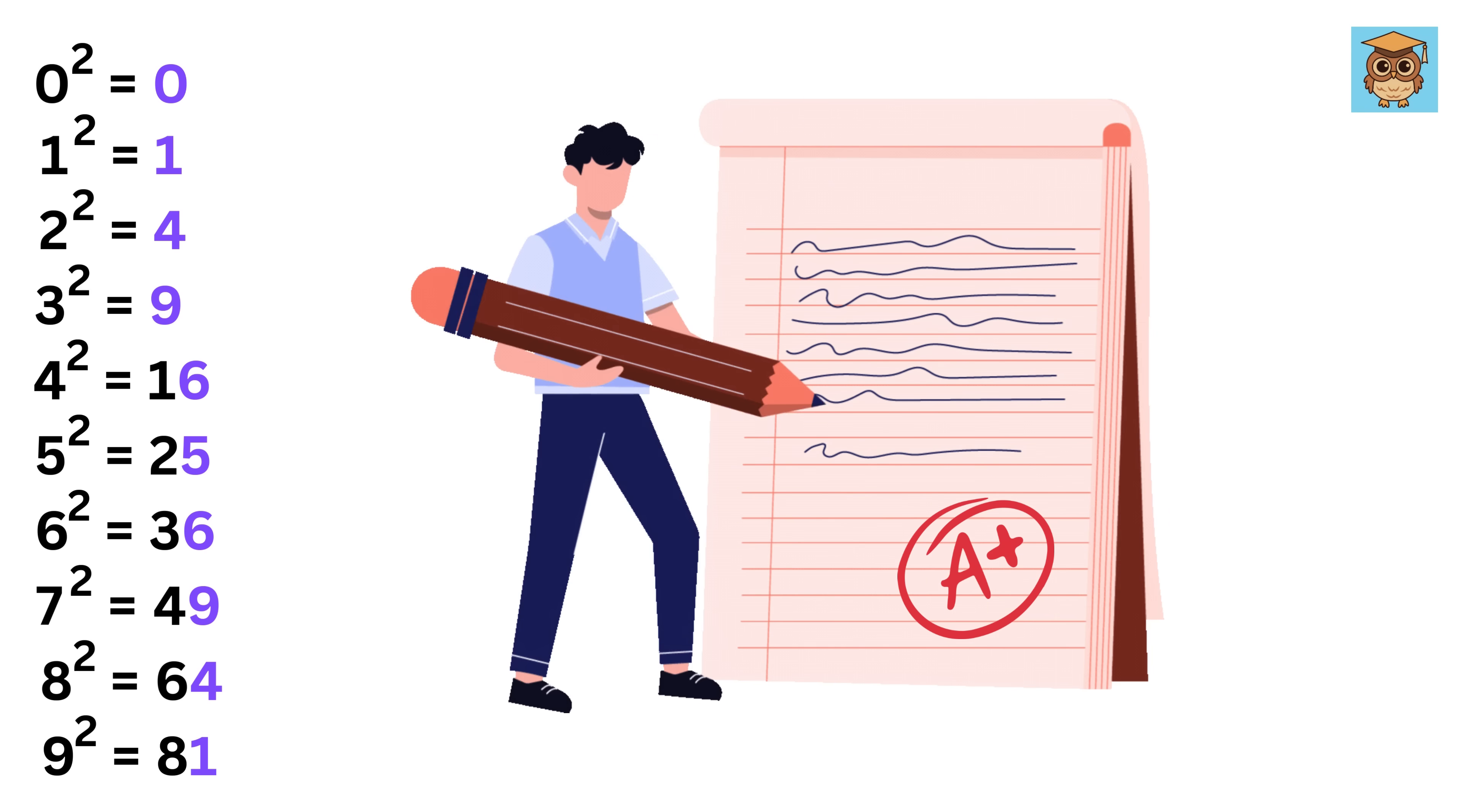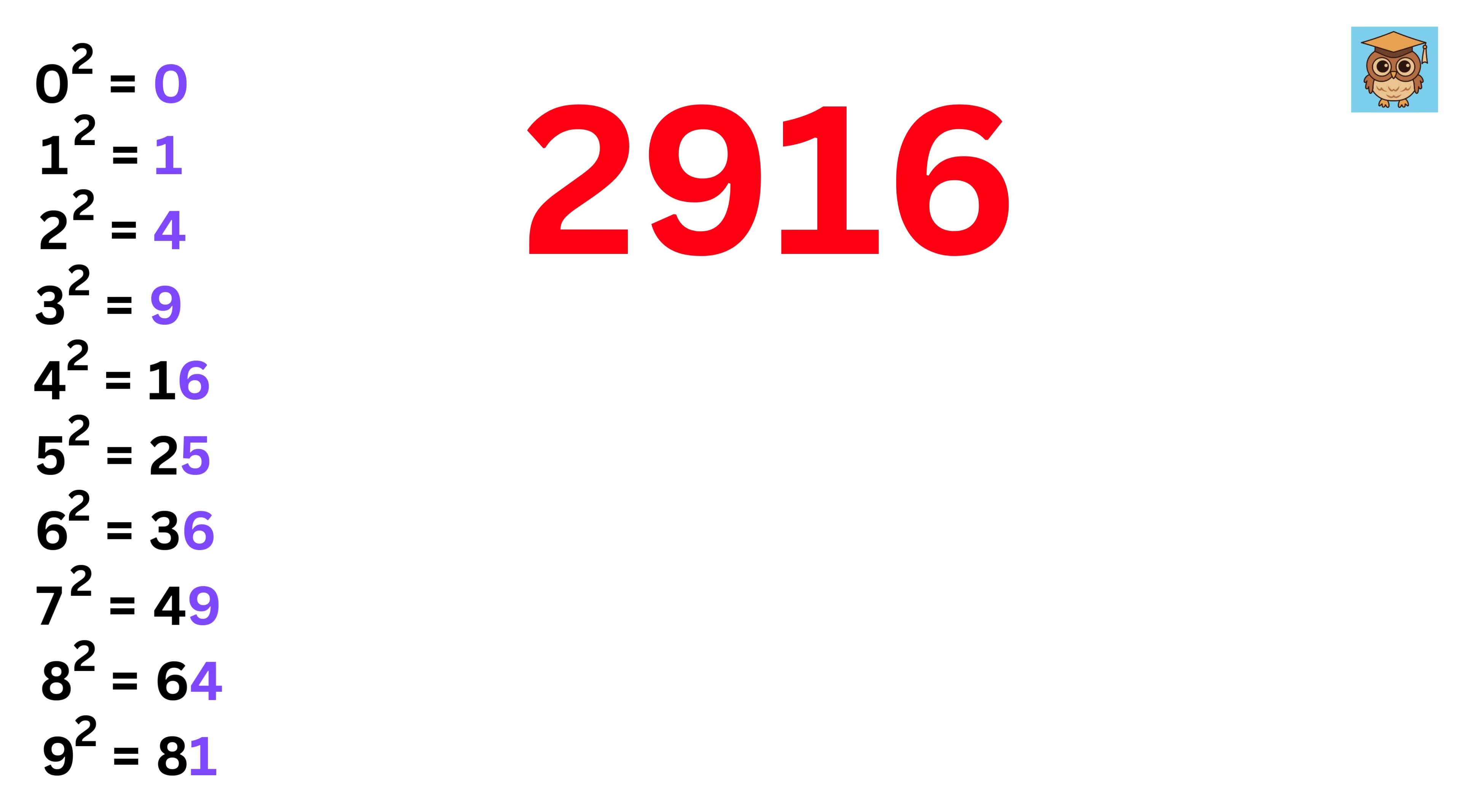Awesome! We will now do a couple more of these examples so that you can become perfect in it. Let us choose 2916. Last digit is 6. So, our answer either ends up in 4 square or 6 square. So, write here 4 and 6.